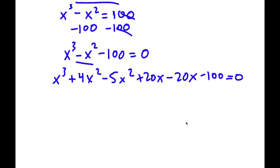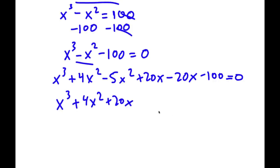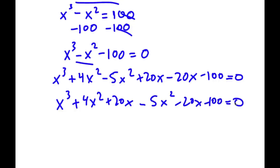So now I'm going to reorder this. I'm going to put this as x to the power of 3 plus 4x squared plus 20x. And then I have negative 5x squared minus 20x minus 100. This is equal to 0.